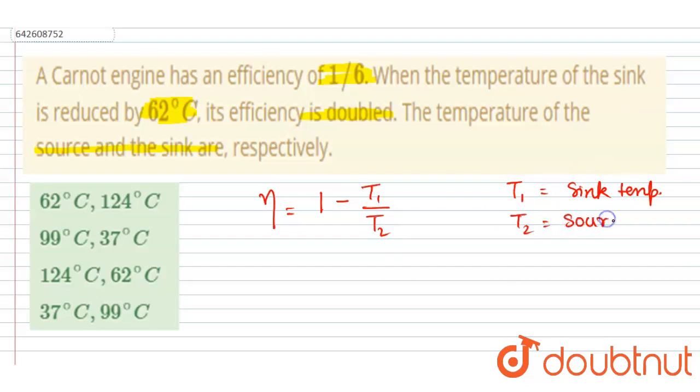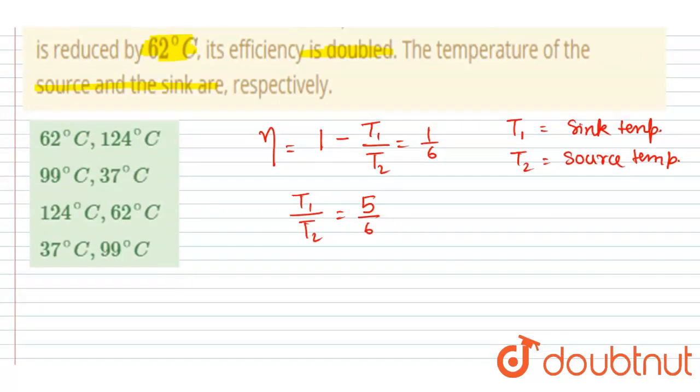So it is said in the question that if the sink temperature is reduced by 62°, this is equals to 1/6. It is given here, so I will write T₁/T₂ is equals to 1 minus 1/6, which equals 5/6. If I write here η' is